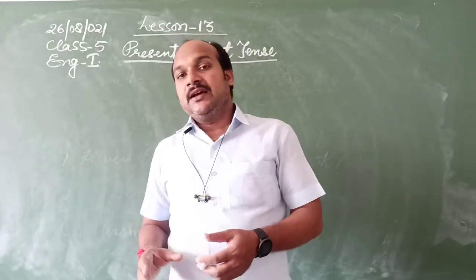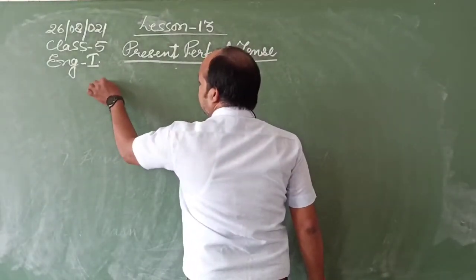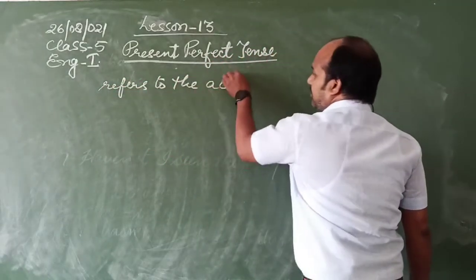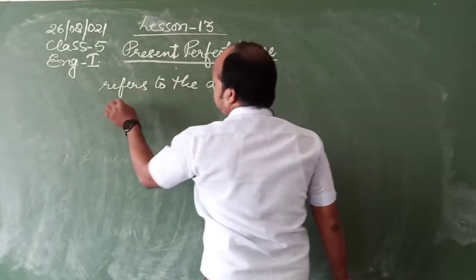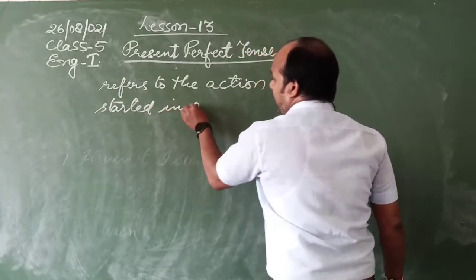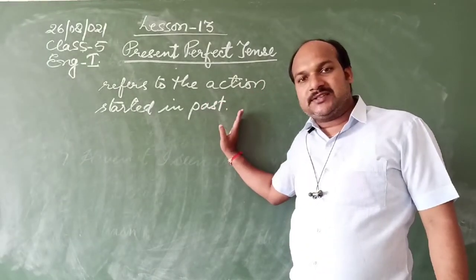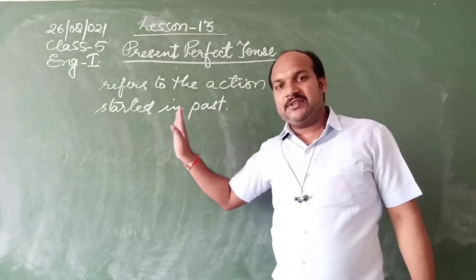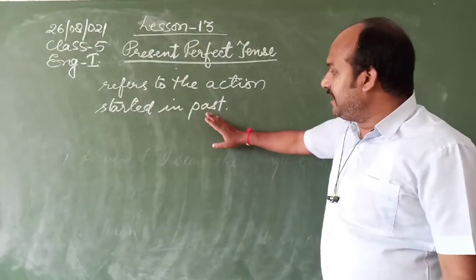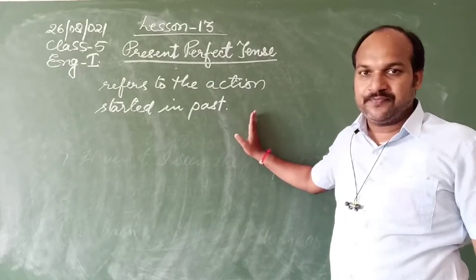Present perfect tense refers to the action which started in the past at an indefinite time. Indefinite time means time is not fixed or not known when it started in the past, and then it continues to the present and finishes there.